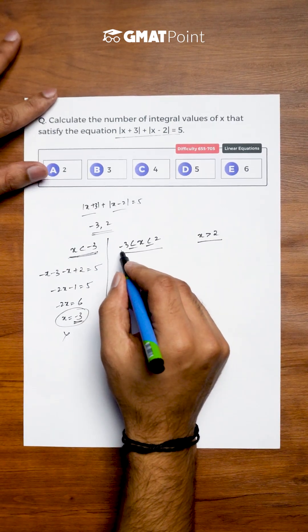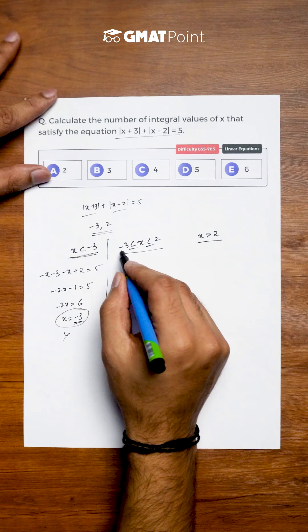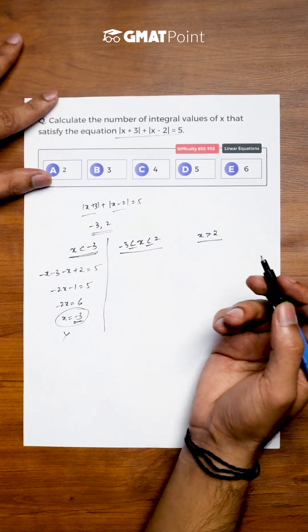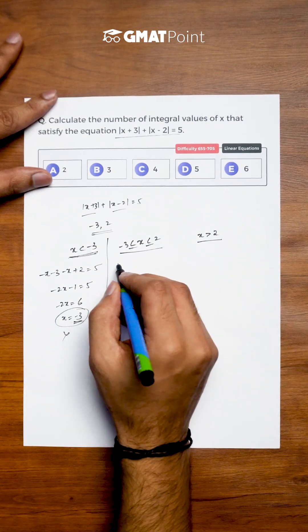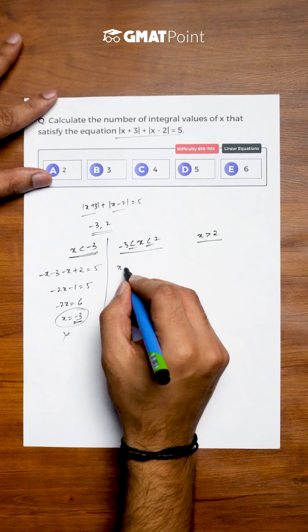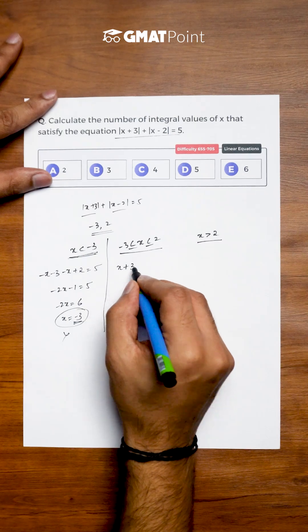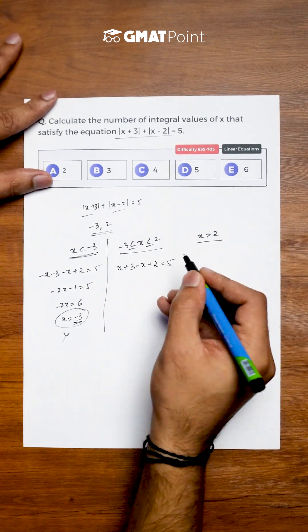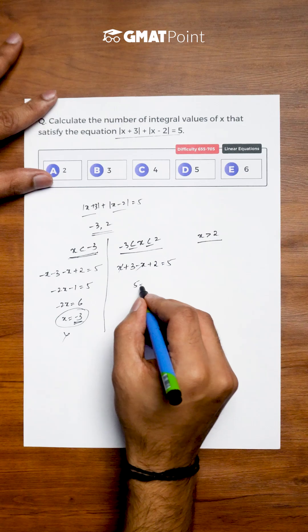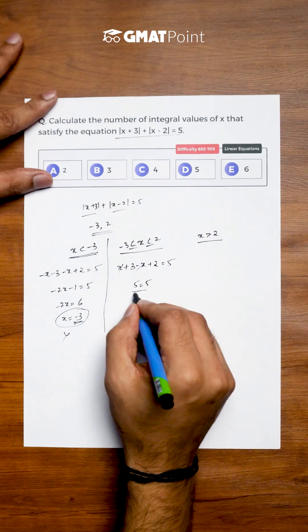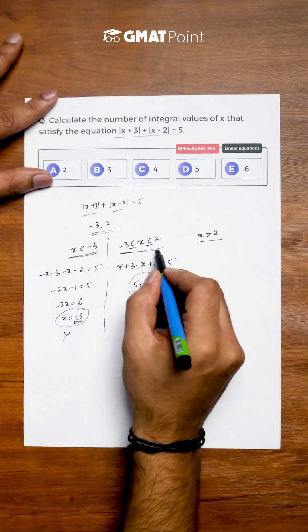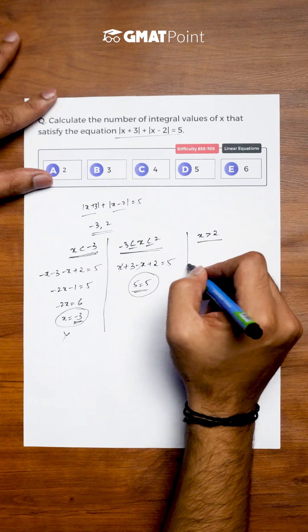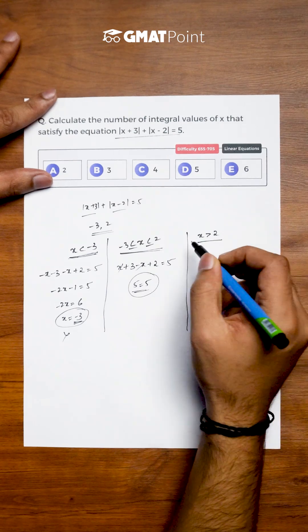For values of x where -3 ≤ x ≤ 2, the equation becomes (x+3) + (-x+2) = 5, which simplifies to 5 = 5. So for all values of x lying between -3 and 2, the equation is satisfied.